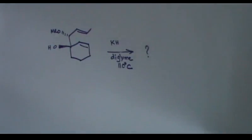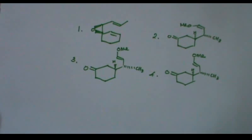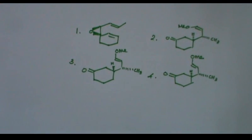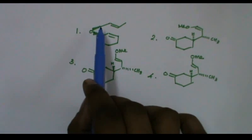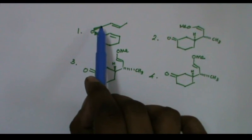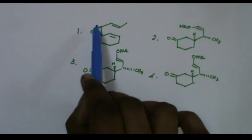Here are the given options. First one, epoxide has been formed. That is OME here that acts as leaving group and the OH displaces that.